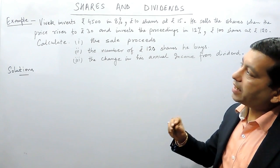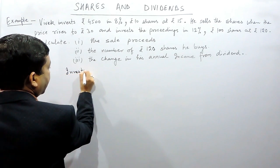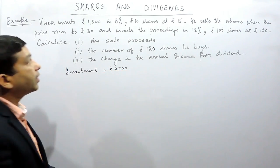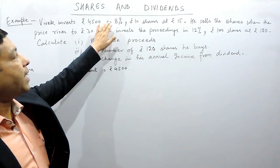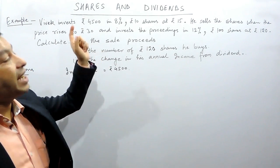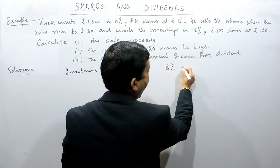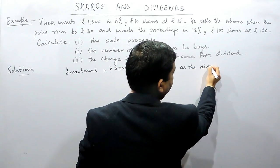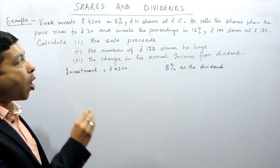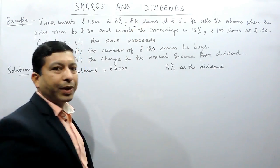The meaning of this statement is that Vivek is investing rupees 4500 — so the investment of Vivek is rupees 4500. The 8% means that whatever he is investing, he will not get 8% on the investment; he is getting 8% as the dividend. And the dividend is not calculated on the investment but on the company value of the shares, which is rupees 10.